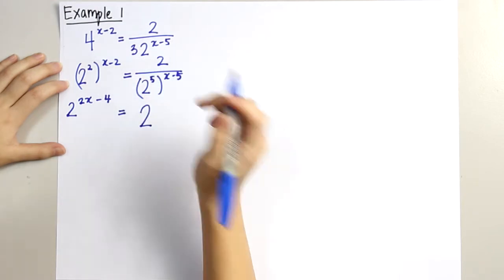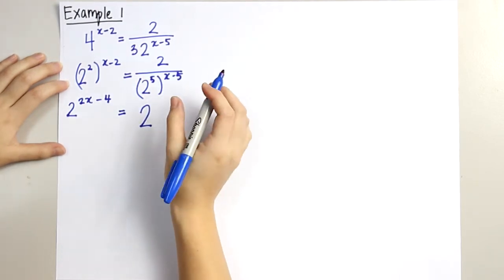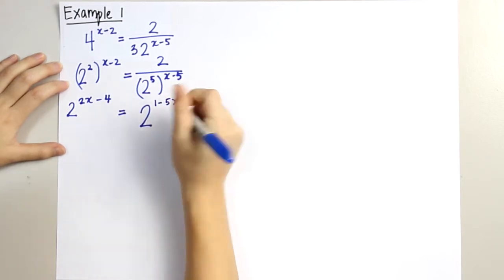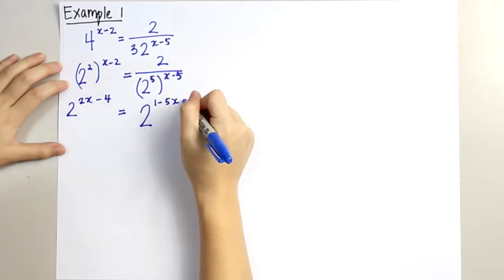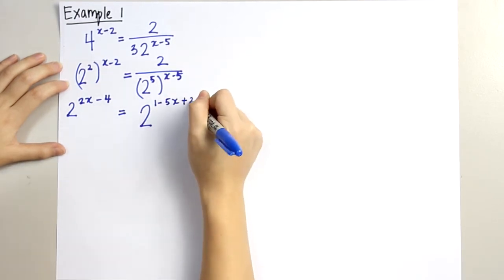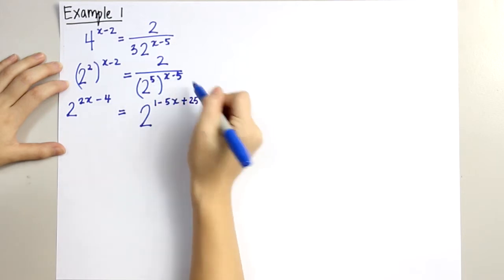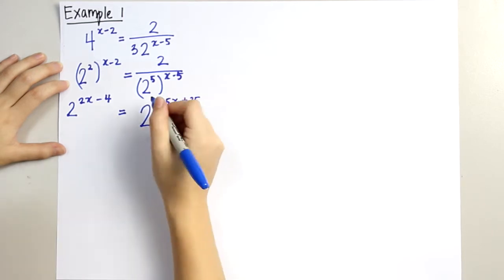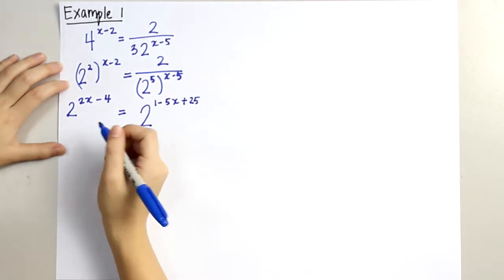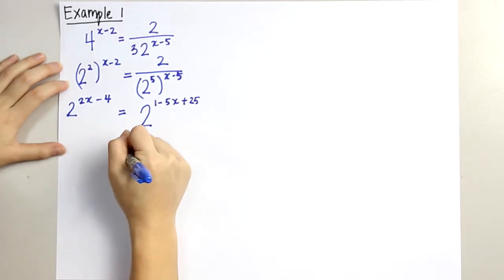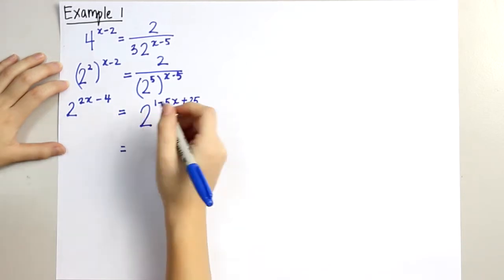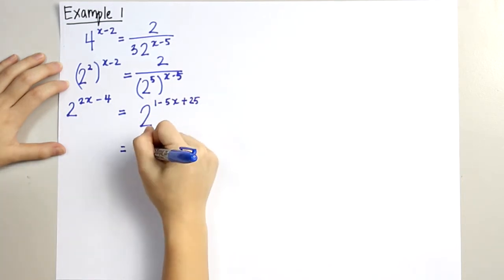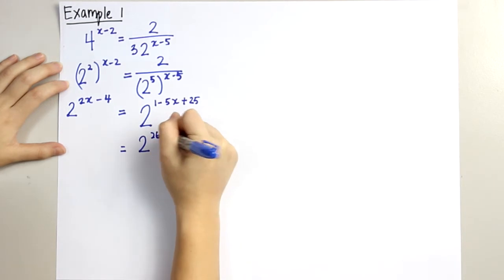For division, according to the laws of indices, division will proceed into minus. So 1 minus 5x, because 5 times x, plus 25 — because 5 times 5 is 25, and the minus will become plus. After minus, minus becomes plus. So now we'll proceed by changing these powers into a simple form: 2 to the power of 26 minus 5x.